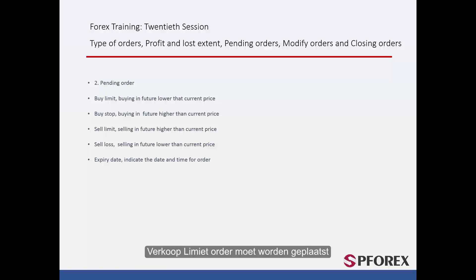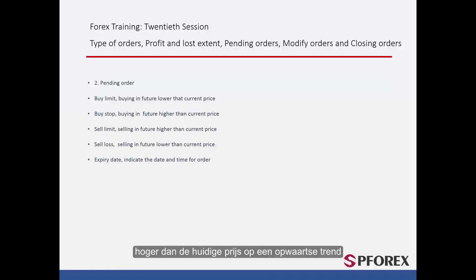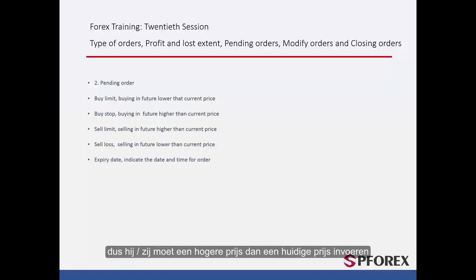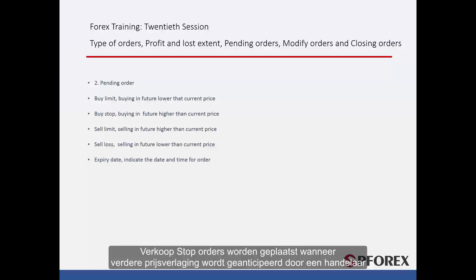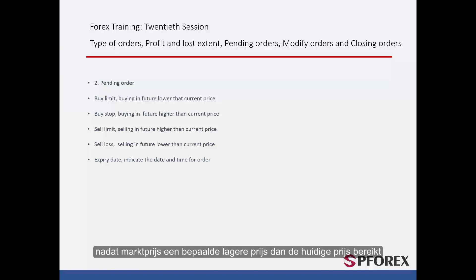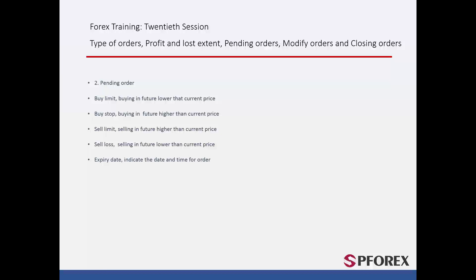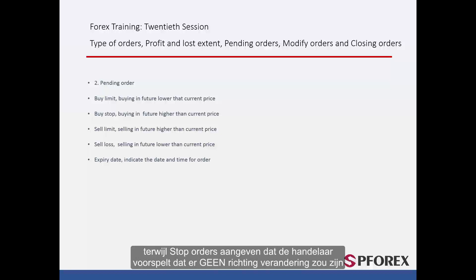Sell limit should be placed when a trader speculates that the market trend will fall after it touches a certain entry price higher than the current price on an upward trend. A trader can order sell limit at that price, entering a price higher than the current price. Sell stop orders are placed whenever further price reduction is anticipated after the market price meets a certain lower price. In conclusion, limit orders must be placed on markets that may have a direction change on a specified price, while stop orders indicate that the trader predicts there will be no direction change even after price reaches a significant level.